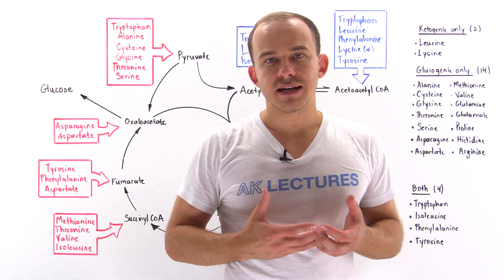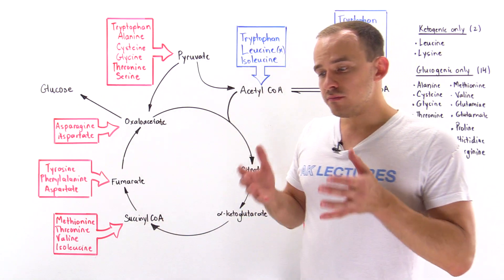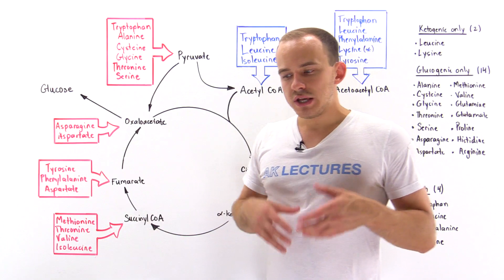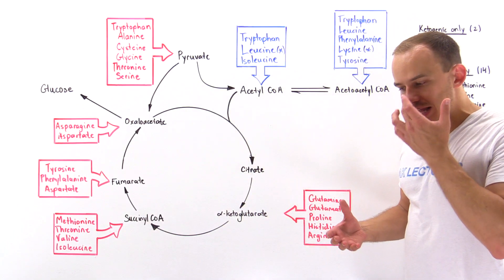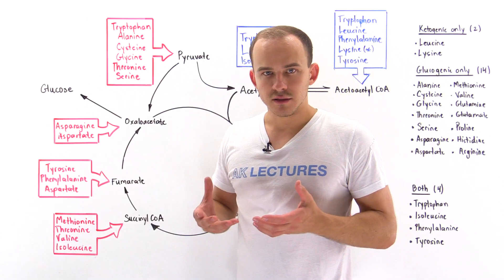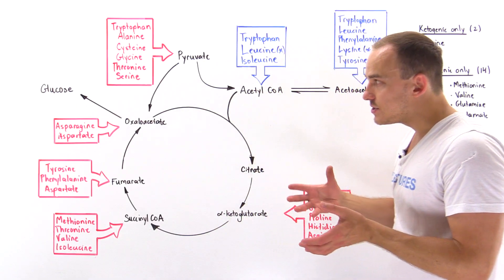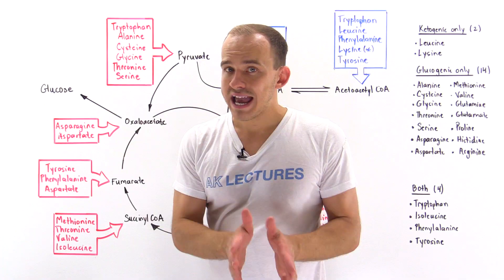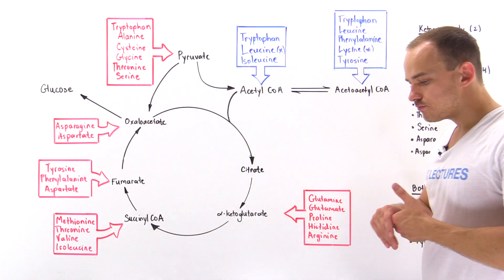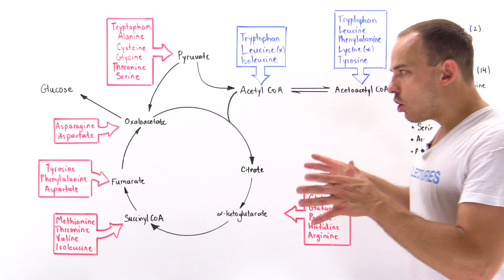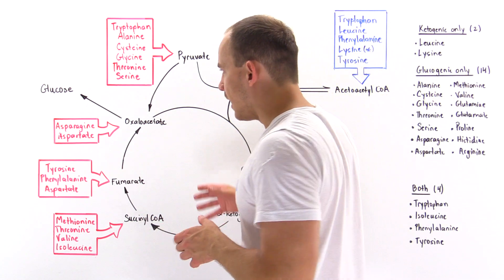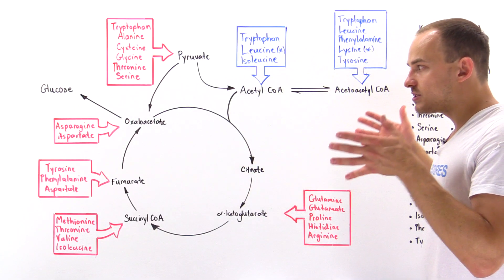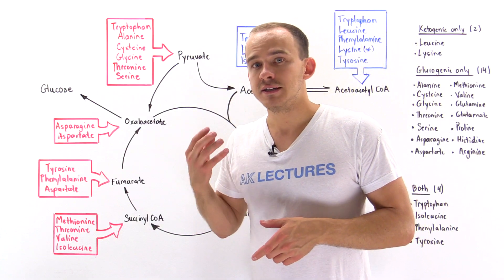When we break down amino acids inside our liver, we essentially remove that alpha amino group and what we have left over is a carbon skeleton. In this lecture and the next several lectures, I'd like to focus on the fate of that carbon skeleton. When we metabolize amino acids and form that carbon skeleton by removing that alpha amino group, all the carbon skeletons formed from the 20 different types of amino acids inside our liver cells lead to one of seven different molecules.